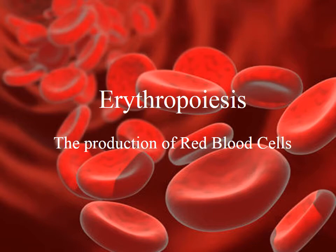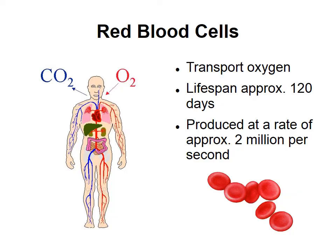The process I'm going to be talking about in this video is erythropoiesis, which is the production of erythrocytes, otherwise known as red blood cells. As we know from our lectures, red blood cells are responsible for transporting oxygen to the body. Because red blood cells only have a lifespan of about 120 days, they are constantly being produced at a rate of about 2 million red blood cells per second.